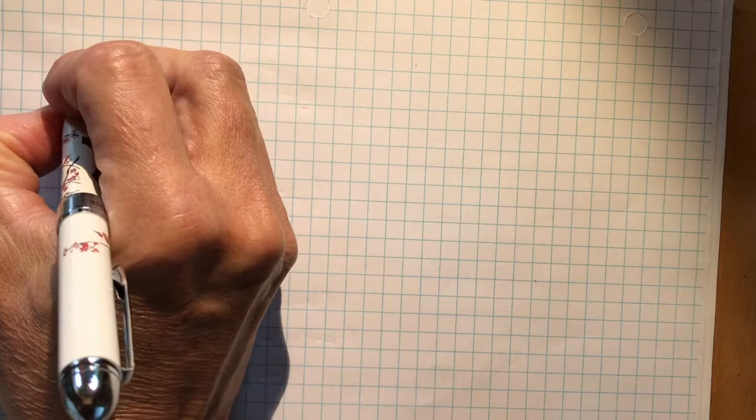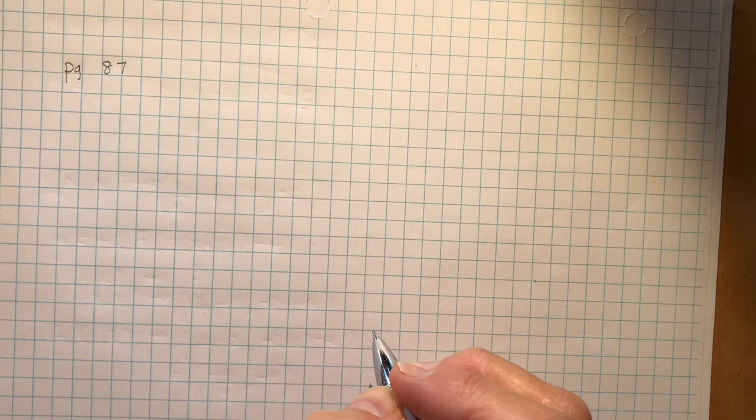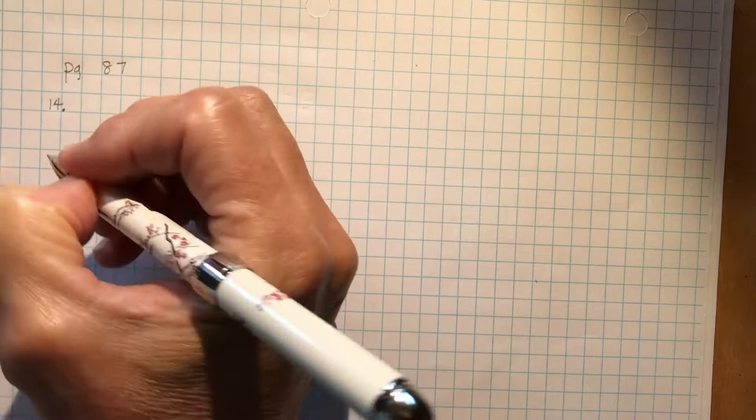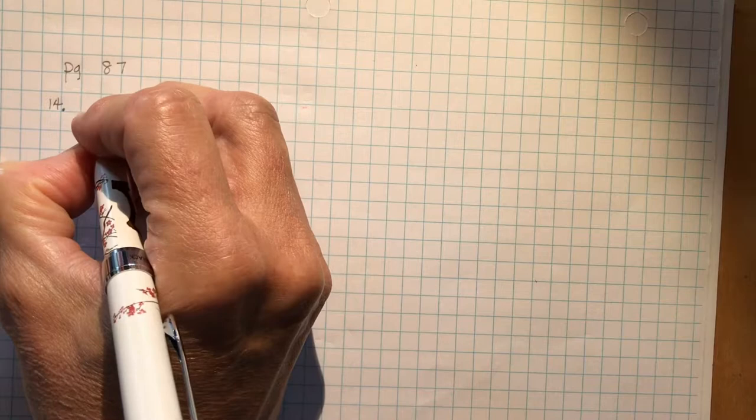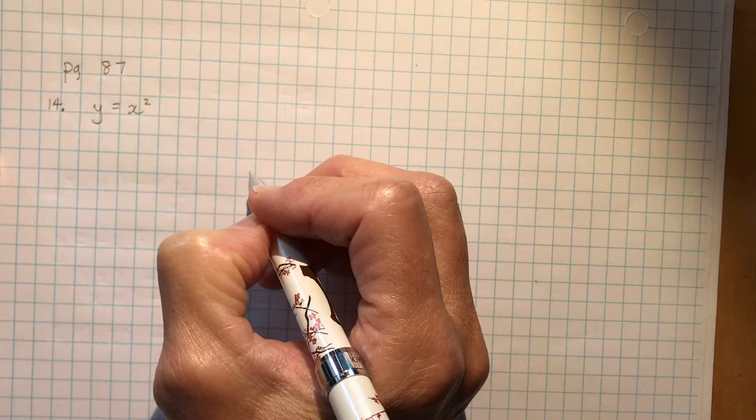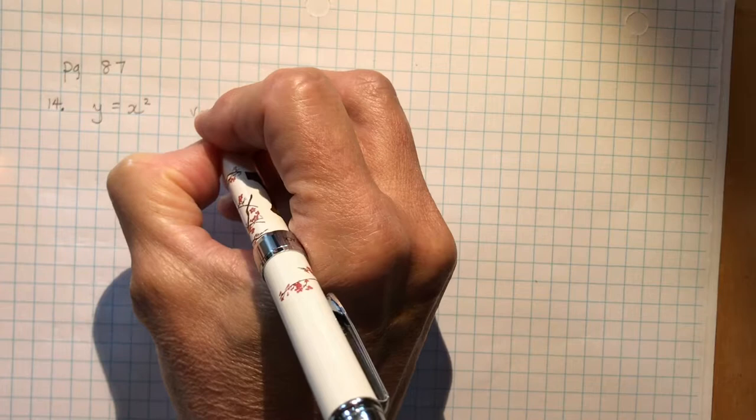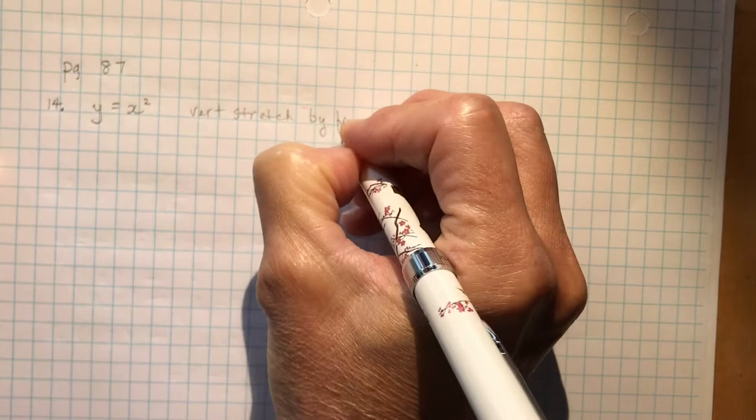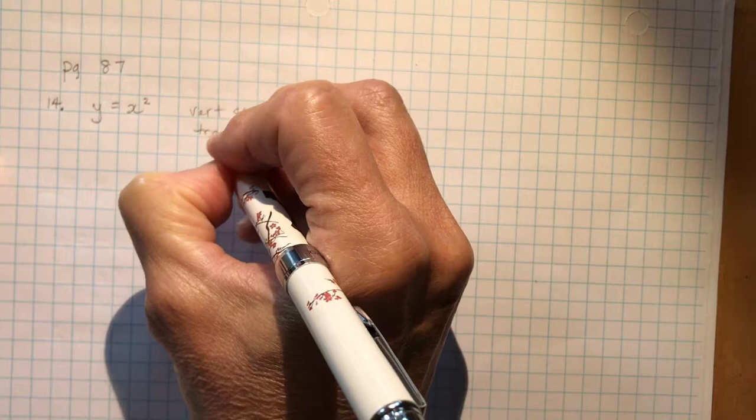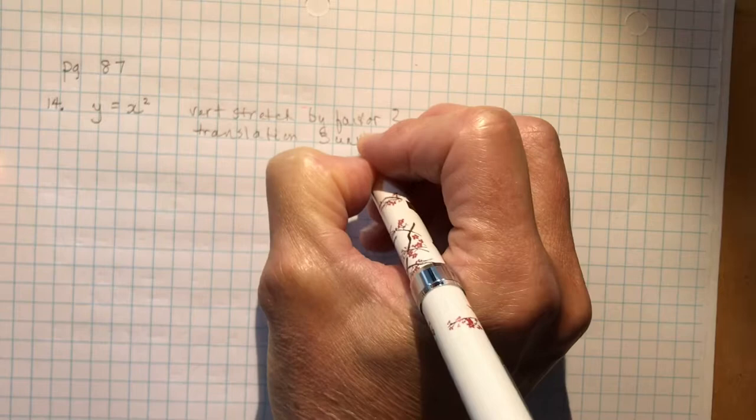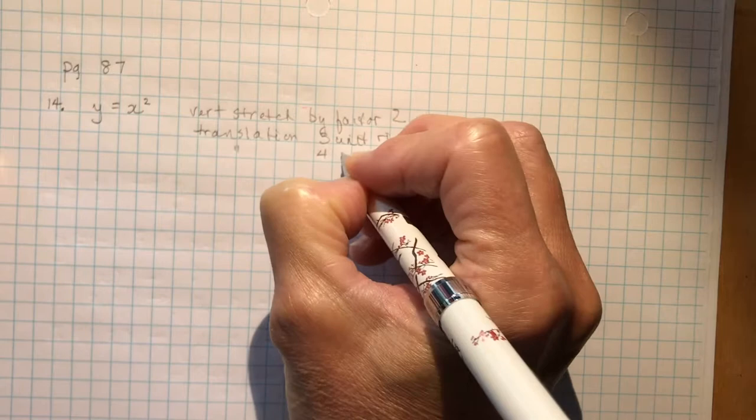I'm going to do some of the examples that are a little bit different from just saying the mapping rule. But remember, this is the critical part for your transformations of a parent function. So let's go to page 87. So page 87. And I'm going to start with number 14 because the most critical things are in 1.8 here. So number 14. And it says three transformations are applied to Y equals X squared. So you're starting with Y equals X squared. It says a vertical stretch by a factor of two. Vertical stretch by a factor of two. Factor of two. A translation three units right. Translation three units right. And a translation four units down. Translation four units down.